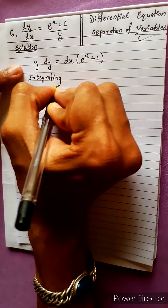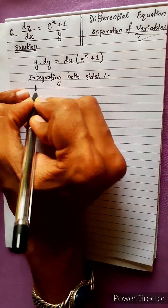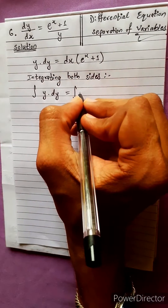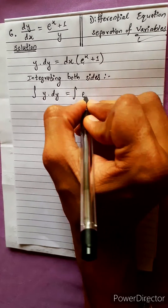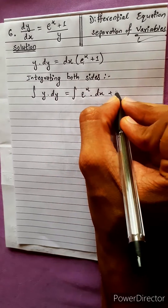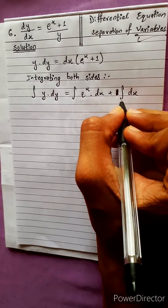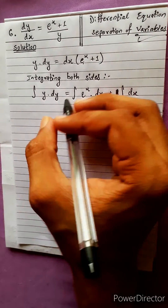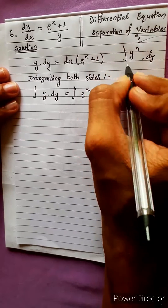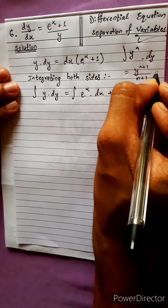Integrating both sides, we get: the integral of y dy equals the integral of e to the power x dx plus the integral of 1 dx. Applying the power rule, the integral of y dy equals y to the power n plus 1 divided by n plus 1, plus a constant c.